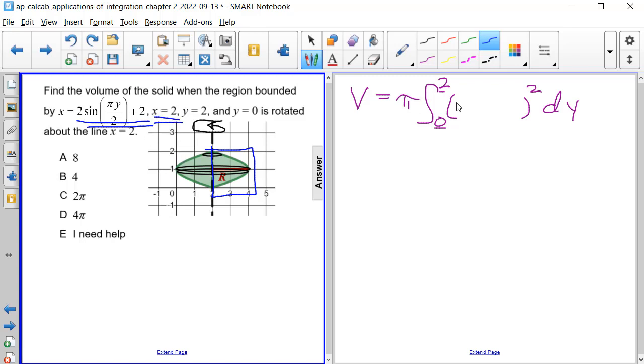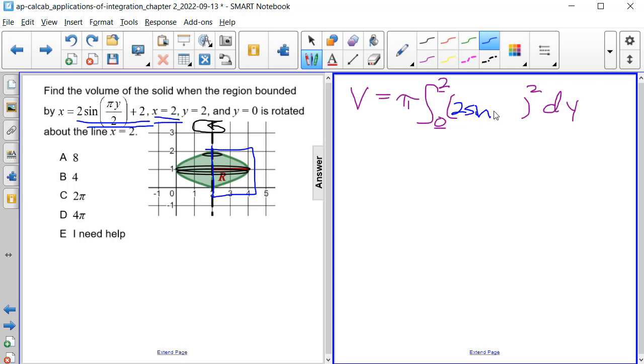So we're going to have 2 sine of pi times y divided by 2 plus 2 from our equation that we have, and then we're subtracting from that x equals 2, so we're going to subtract 2. And that's going to represent our radius, so we're going to square it. And as before, we're going to be differentiating with respect to y, or the height of each disk is dy.